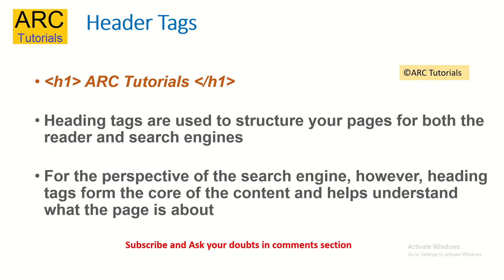The next ones are the header tags. Ever since the semantic web has come up, heading tags have become extremely crucial to define the information structure in your page. Heading tags are used to structure your pages for both the reader as well as search engines. For search engines, heading tags form the core of the content and help understand what the page is about and the information flow. You can have the proper h1 tag as the main heading, then smaller ones like h2, h3, h4 depending on the subsections in your web page content. Keep in mind that the information structure of your content is extremely critical, and having the right header tags will benefit you in terms of search engines understanding your page.